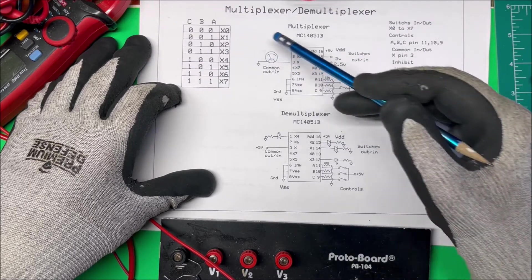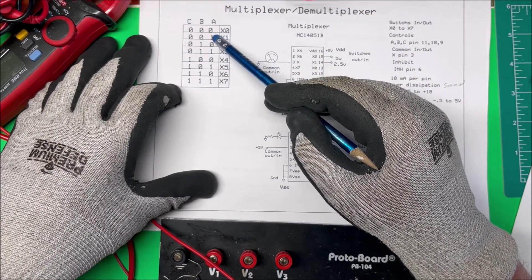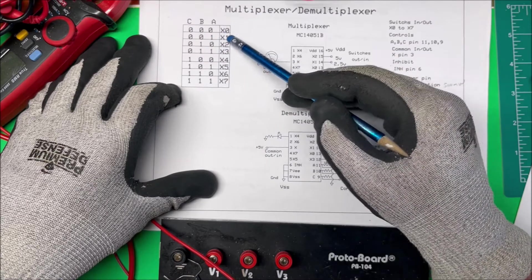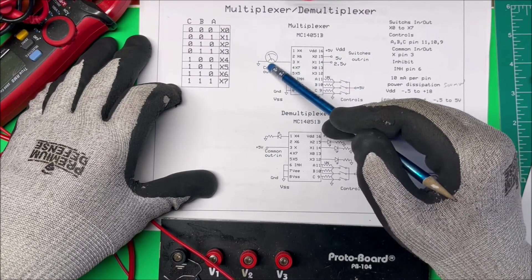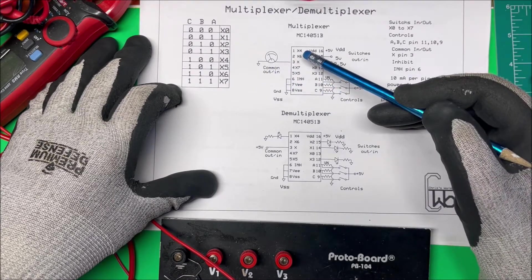I'm not using X0, but if I put switch pin A on here, then X1 is going to be on. In this case, X1 has 2.5 volts on there, so I'm going to see 2.5 volts over here on the common output.